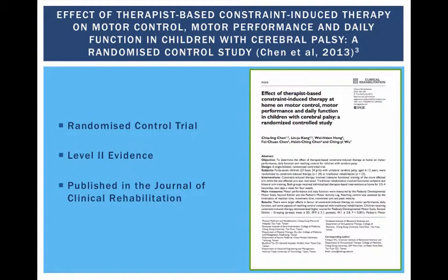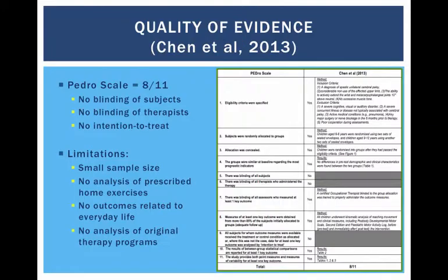Chen et al., in 2013, conducted a randomized control trial, also at Changgung Memorial Hospital in Taiwan, to compare the effect of constraint-induced movement therapy with traditional occupational therapy rehabilitation techniques in children with cerebral palsy. This trial was very similar to the previous study, with the same strict eligibility criteria. The final 47 children were randomly allocated to either the intervention group, who received constraint-induced movement therapy, or the control group, who received traditional rehabilitation therapy. Both groups were also encouraged to complete set exercises at home under the supervision of their parents. Similarly to the previous trial, this paper also scored 8 out of 11 on the PEDro scale, and for the same reasons, they could not blind the subjects or the therapist. They also did not declare an intention to treat and only treated one group with the intervention rather than having a crossover design.